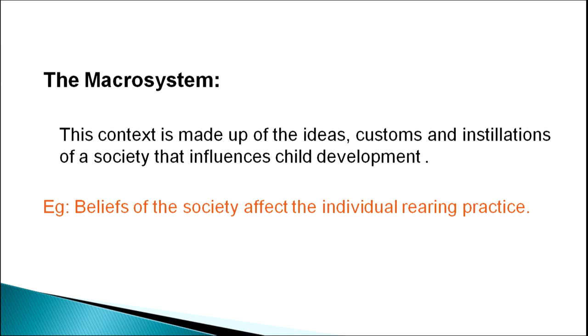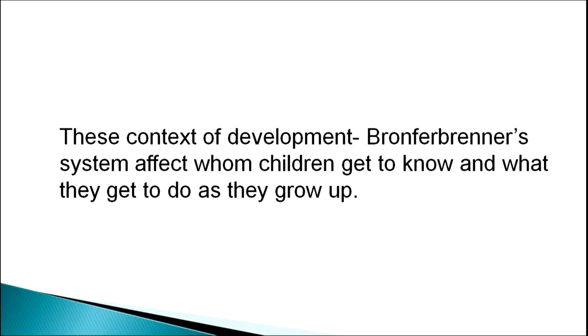The macrosystem is made up of the ideas, customs and institutions of a society that influence a child's development — that is, the beliefs of the society affect individual rearing practices. For example, in older times in India, boys were given more emphasis in education while girls were directed toward household chores. But now things have changed and both boys and girls perform equally well in all sectors. These four systems — microsystem, mesosystem, exosystem and macrosystem — directly affect a child's growth and development, shaping whom the child gets to know and what they get to do as they grow up.